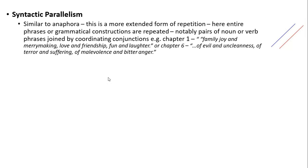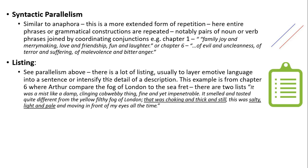Parallelism is another structural feature, similar to anaphora. Hill does this all the time — once you're aware of it, it's really difficult to ignore. She often does it in groups of three, as illustrated here: 'family, joy and merrymaking,' 'love and friendship,' 'fun and laughter.' Equally she does it in pairs at various stages. Interestingly, one set in chapter one is set against another set of three pairs of phrases linked by conjunctions which are the opposite — abstract nouns that are negative.